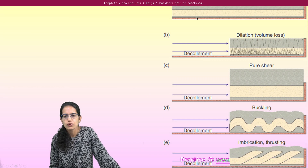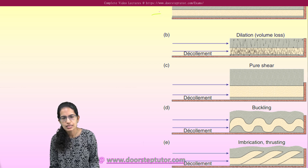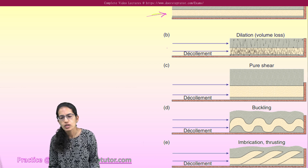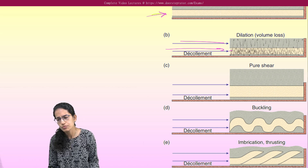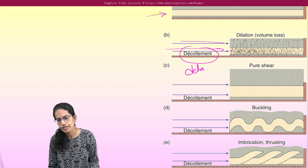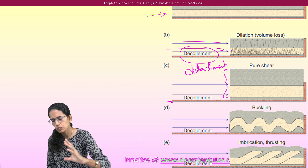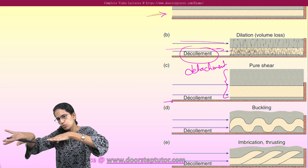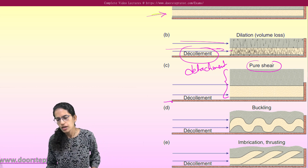From this diagram you would understand that this was the initial rock structure. With this initial rock structure there was a dilation or a loss of volume and a kind of detachment occurred. Decollement is also called as detachment — the top rock mass detached from the bottom one and started to move. If it moved parallel or opposite to one another we call it as pure shear.